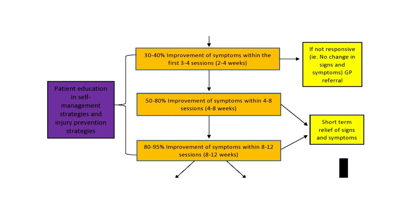If anywhere along the path between the second and third orange rectangles there is only temporary relief of symptoms, this takes you through to the yellow square on the right. From there, you proceed to the blue circle at the bottom — involving reassessment with the GP, further investigations, possibly a pain specialist or musculoskeletal specialist, and perhaps imaging studies.